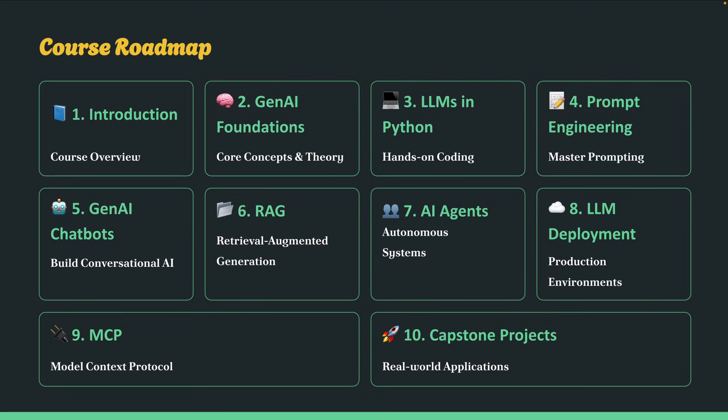This course is beginner-friendly, practical, and designed to give you skills you can use immediately. It's available right now on Udemy for 549 Indian rupees as the launch price. Check the link in the description, enroll today, and let's start building amazing generative AI applications together. I'll see you inside the course.